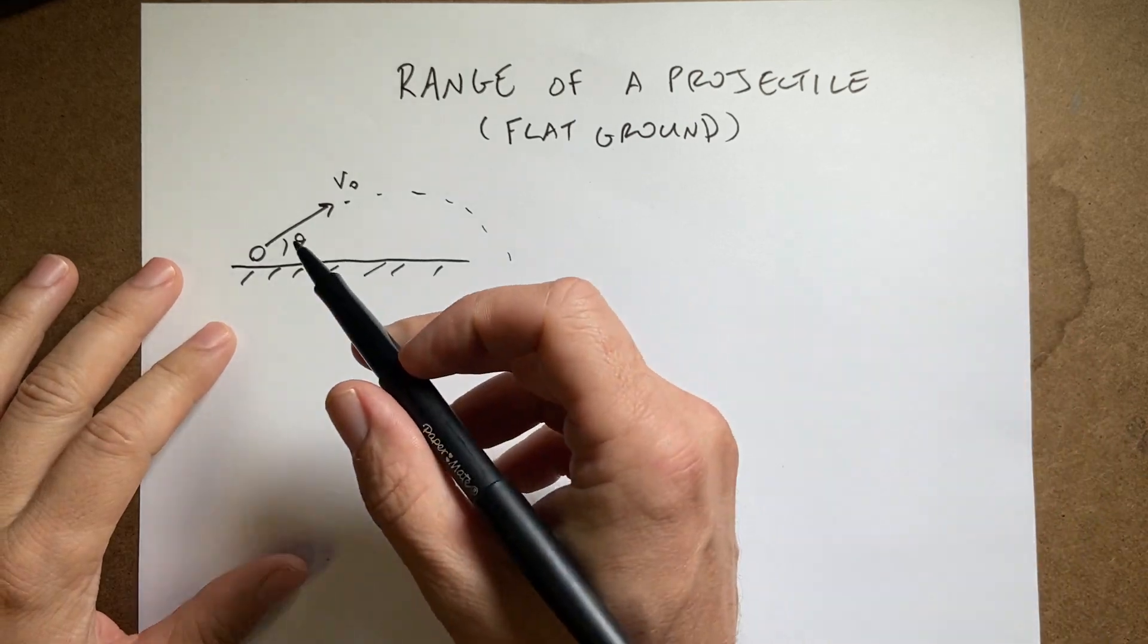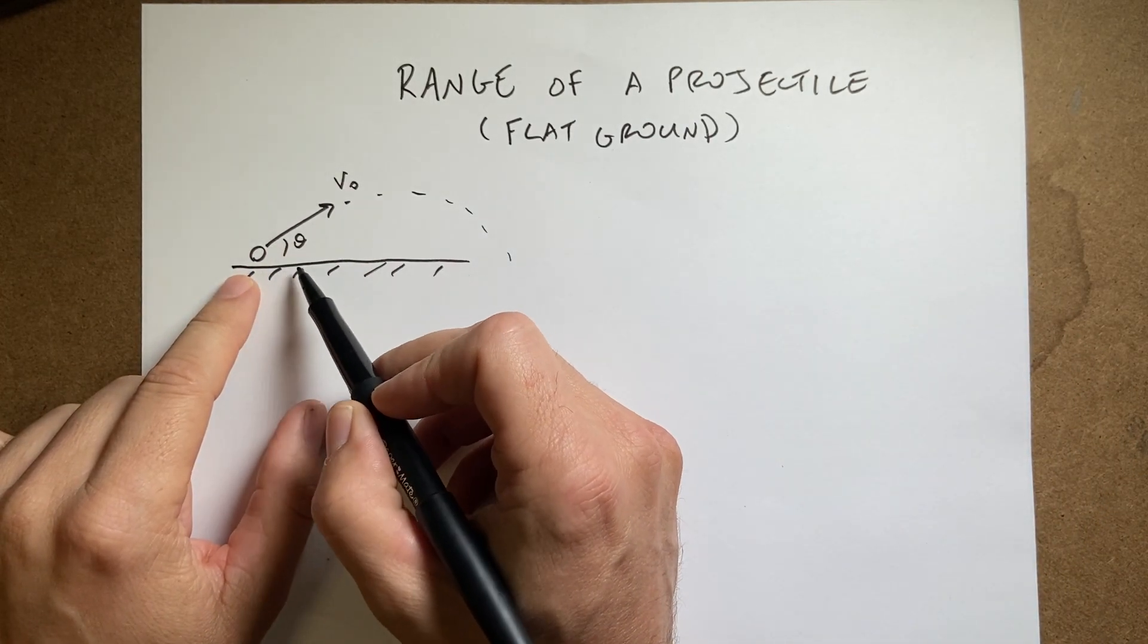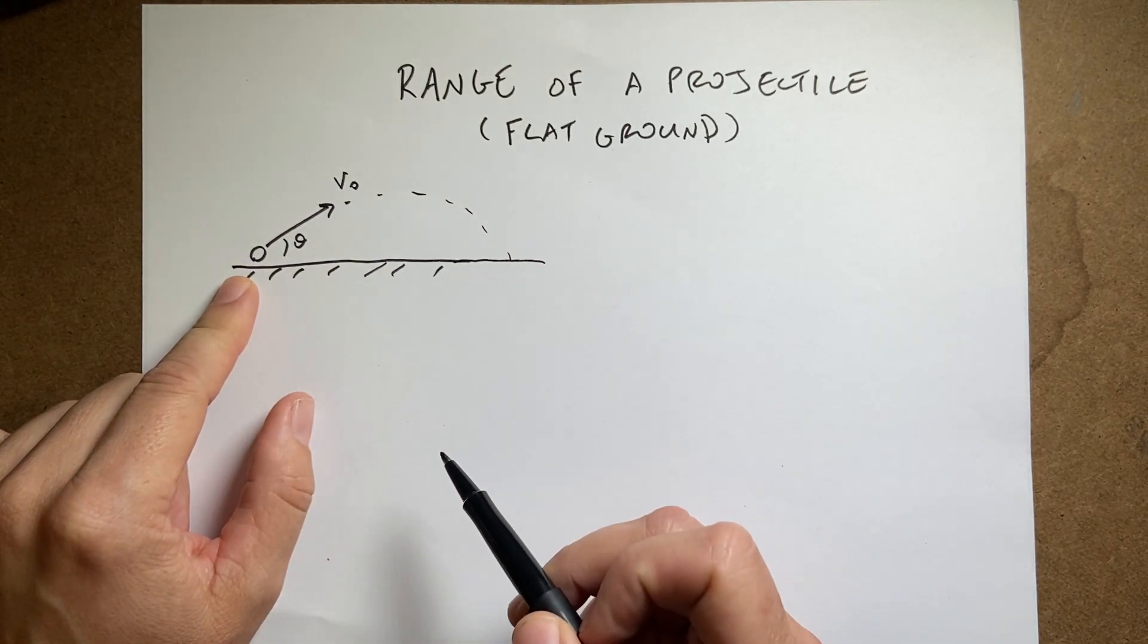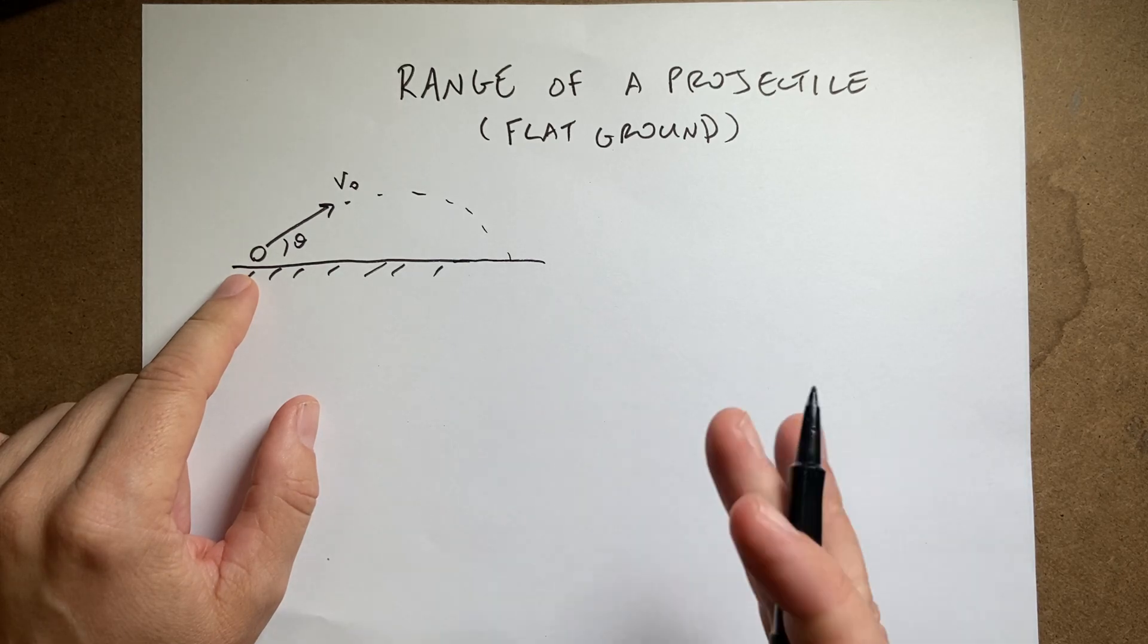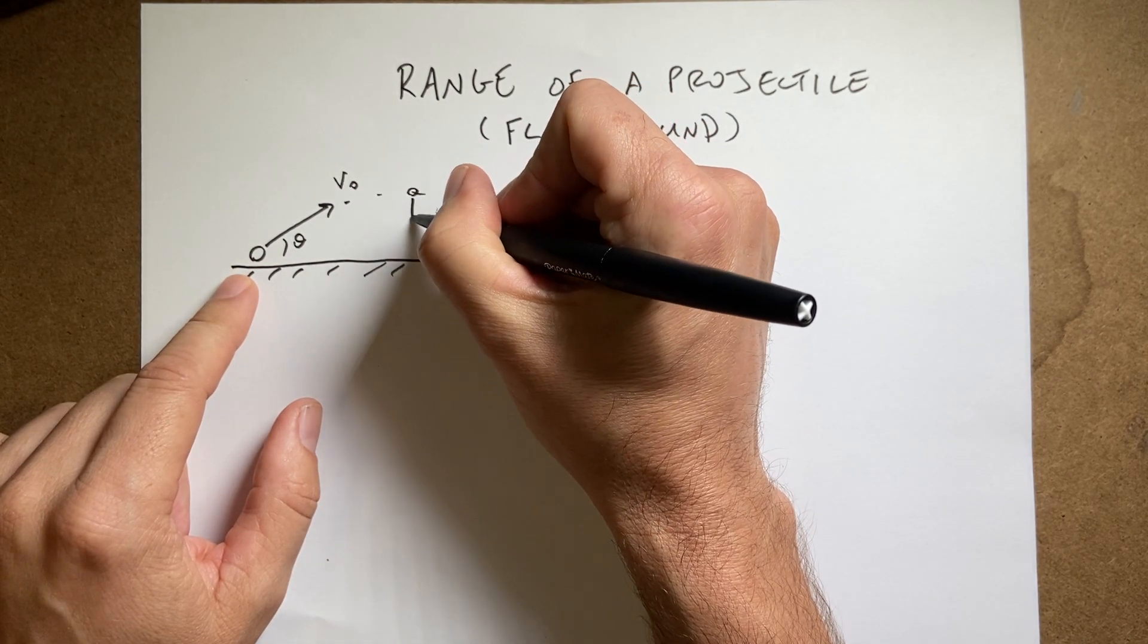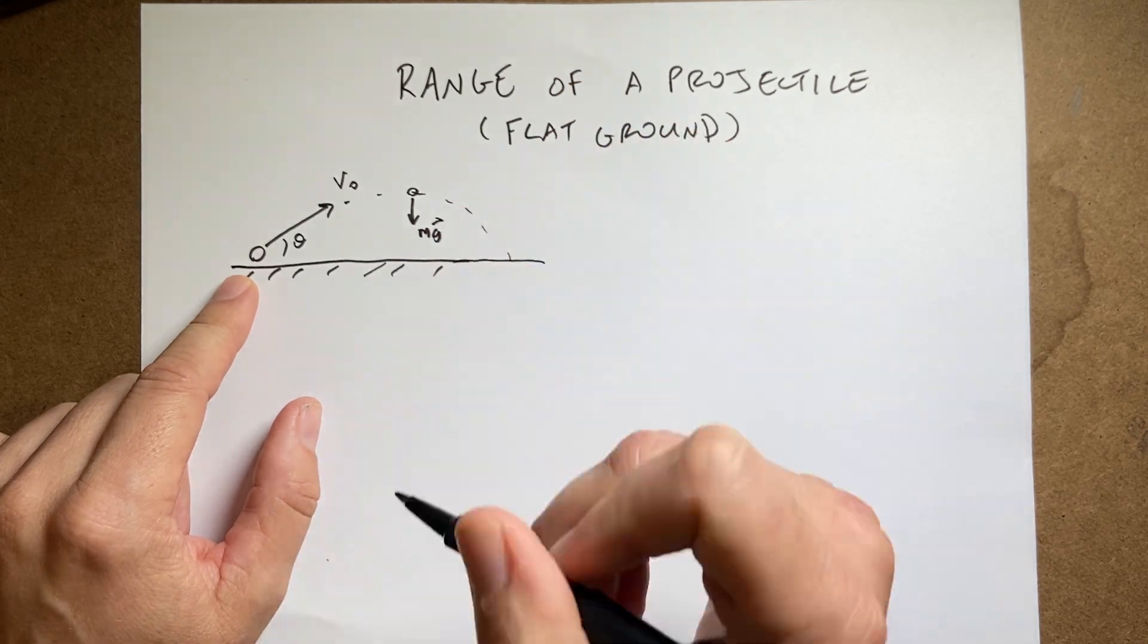So let me just go ahead and start with a ball or any object that's launched at some angle theta above the surface like this with initial velocity v0. I'm going to assume there's no air resistance so that the only force on this ball or whatever it is while it's moving is the gravitational force pulling straight down.